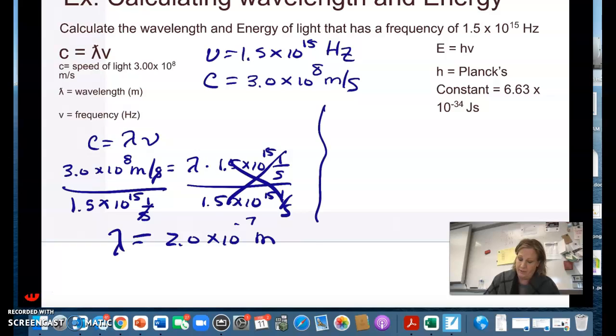I can also calculate energy. So energy is going to equal Planck's constant which is 6.63 times 10 to the negative 34 joules times seconds. It's going to equal that times the frequency of the wave.